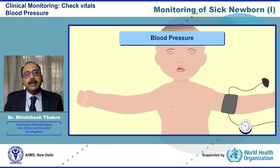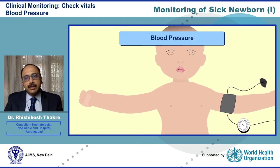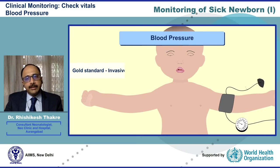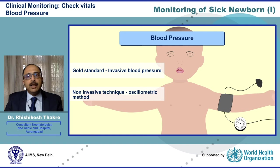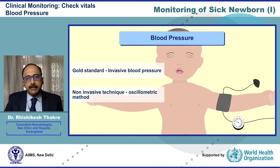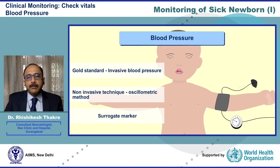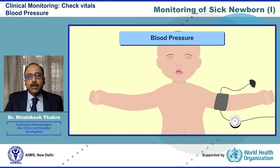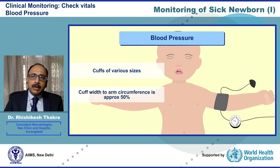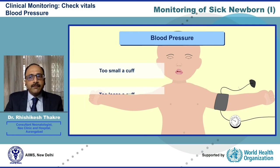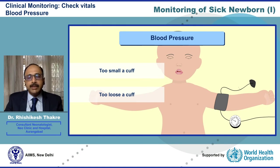It is equally important that all sick newborns must have blood pressure periodically monitored. The gold standard for blood pressure monitoring is invasive blood pressure; however, non-invasive assessment using oscillometric blood pressure is also acceptable as a surrogate marker. To optimize use of blood pressure measurement, one must use an appropriate size cuff, ensuring that the cuff width to arm circumference ratio is approximately 50 percent. Too small or too loose a cuff will lead to erroneous values. One must look at multiple values of blood pressure rather than a single value while interpreting.